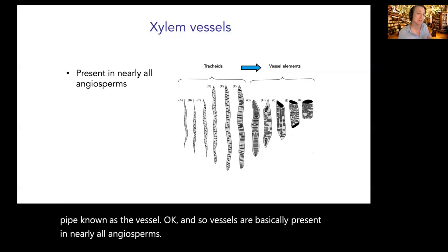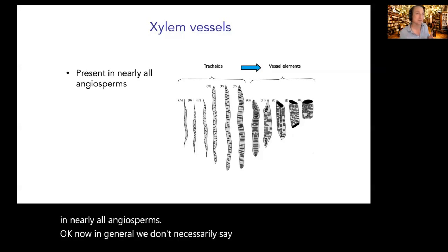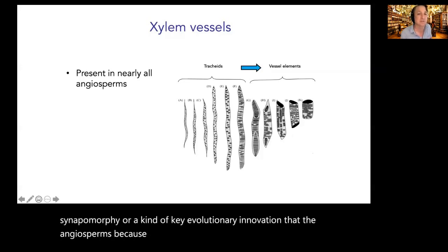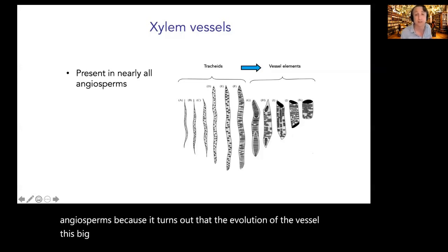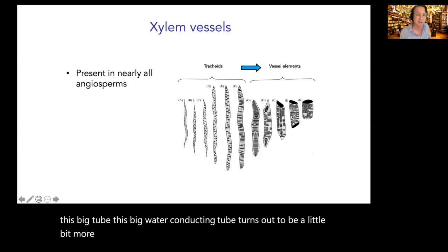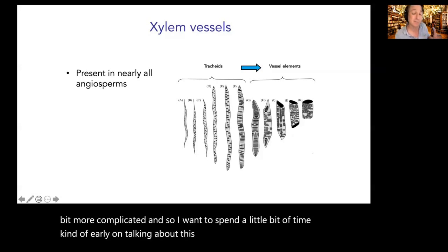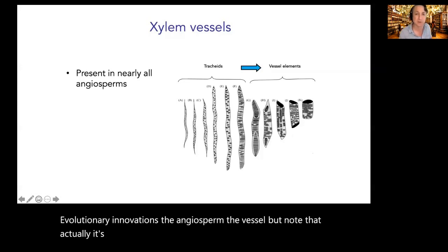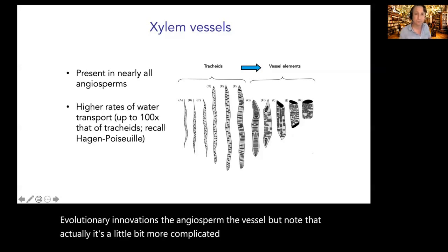Within angiosperms we see both tracheids and another pipe known as the vessel. Vessels are present in nearly all angiosperms. We don't necessarily call vessels a synapomorphy of angiosperms because the evolution of this big water-conducting tube turns out to be a little more complicated. I want to spend some time discussing this key evolutionary innovation — the angiosperm vessel.